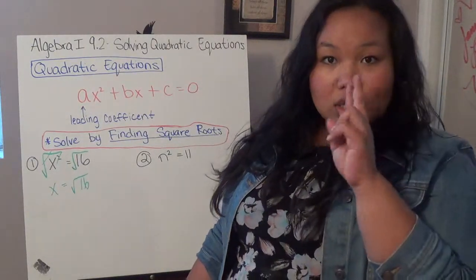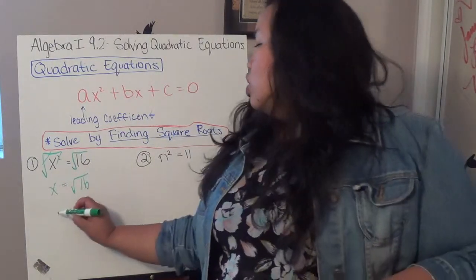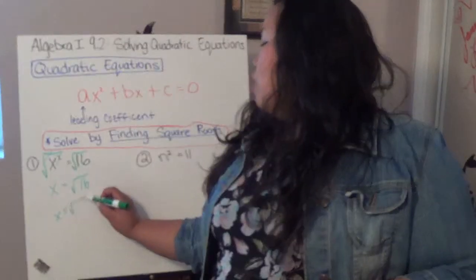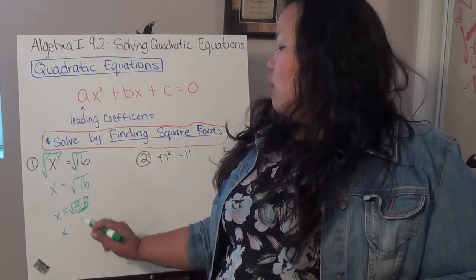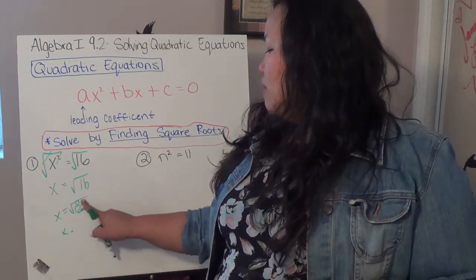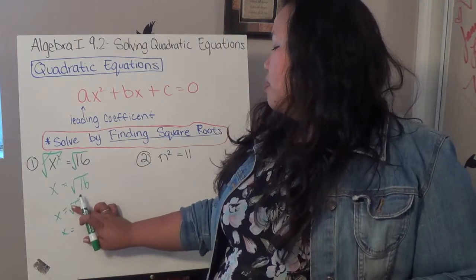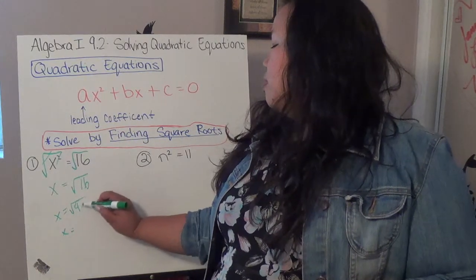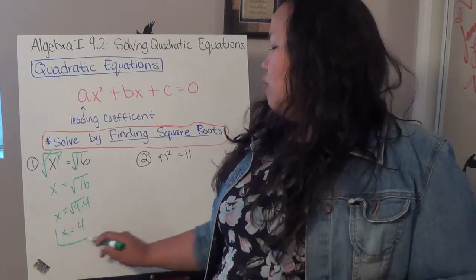So, if I have x equals the square root of 4 times 4, so that means, because there's two of the same kind in here, it's x equals 4. So, x equals 4.